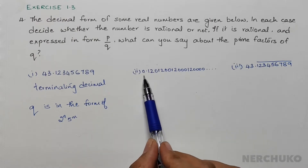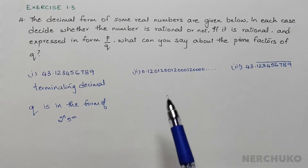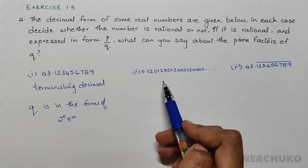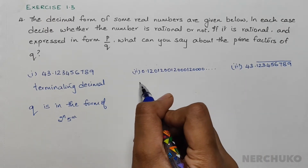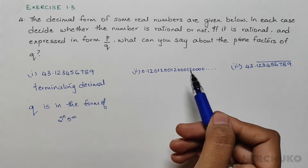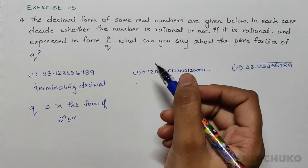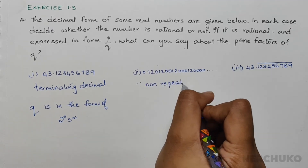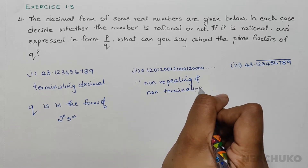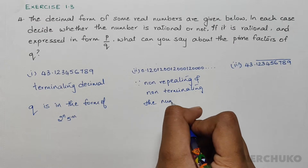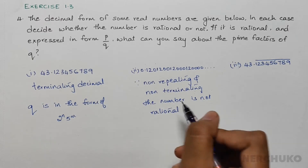For the second part, we have 0.120120012000... and so on. We have a non-terminating decimal, but it is also non-repeating. Therefore, this is not a rational number, because a rational number should either be a terminating decimal or a non-terminating repeating decimal. Since it is non-repeating and non-terminating, the number is not rational and cannot be written in the form of P by Q.